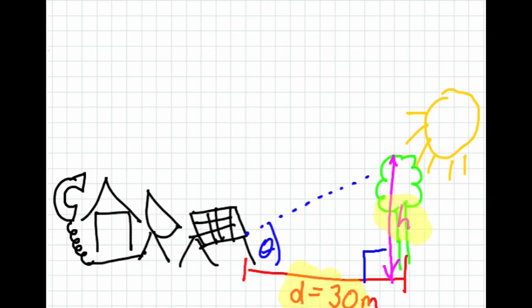So we can use the tan ratio to find the height of this tree. So let's do that real quick, we've got tan theta equals the opposite over the adjacent. So in this case, the opposite was the h, and the adjacent was d.